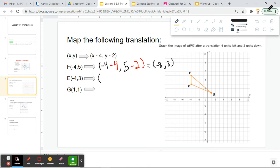For my next point, my x-coordinate is negative 4, so I need to do negative 4 minus 4, and my y-coordinate is 3, so I need to do 3 minus 2. Negative 4 minus 4 remains negative 8, and 3 minus 2 would be 1.